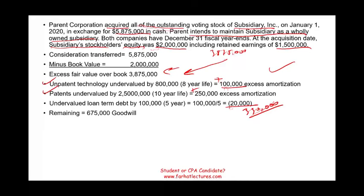The remaining $675,000 we cannot assign to anything, so we consider it goodwill. Now we understand how goodwill is computed. We took the $3,875,000, assigned it to various assets, and whatever we cannot find an asset to park the value in, we assign to goodwill.